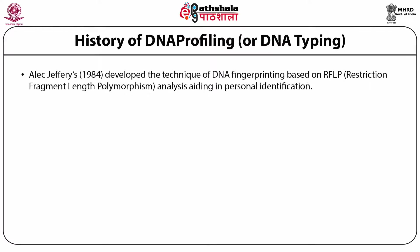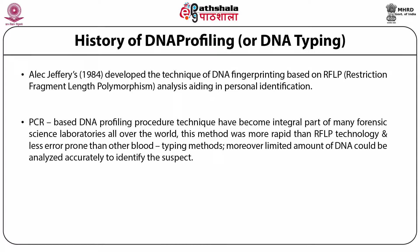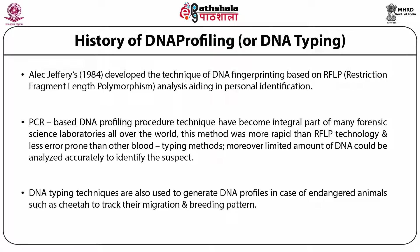Alec Jeffreys in 1984 developed the technique of DNA fingerprinting based on RFLP analysis, aiding in personal identification. The development of PCR further diversified the role of molecular biology in forensic science. PCR-based DNA profiling technique has become an integral part of many forensic science laboratories all over the world. This method was more rapid than RFLP technology and less prone to errors than other blood typing methods. Moreover, a limited amount of DNA could be analyzed accurately to identify the suspect. DNA typing techniques are also used to generate DNA profiles in case of endangered animals such as cheetah to track their migration and breeding patterns.